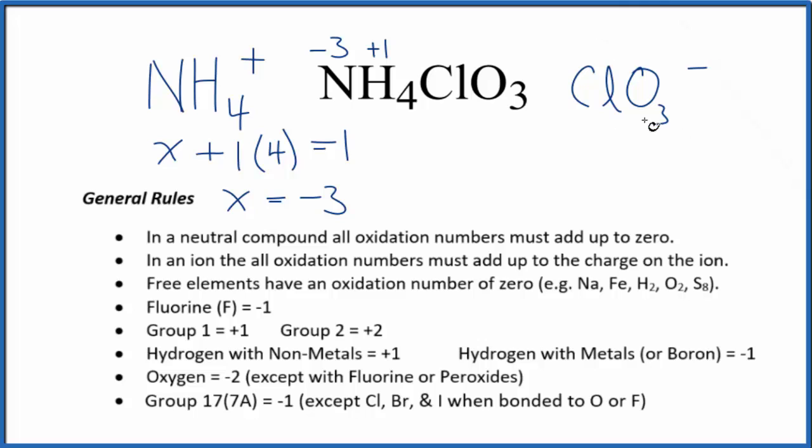For the chlorate ion, we don't know what the chlorine is, but we do know that oxygen is going to be minus two, with just a few exceptions. So we have a minus two, we have three oxygen atoms, and the whole thing equals the charge on the chlorate ion, which is that minus one.